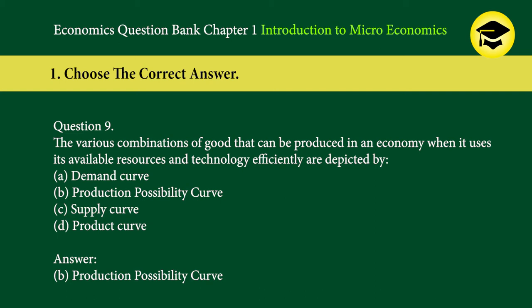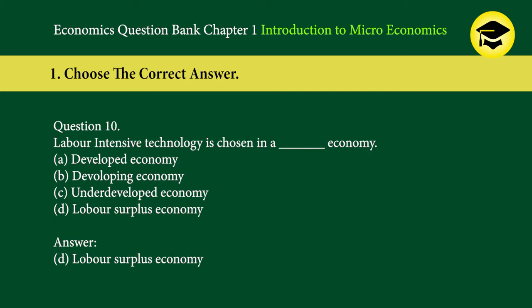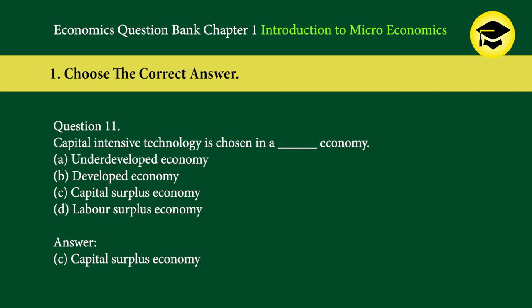Question 9: The various combinations of goods that can be produced in an economy when it uses its available resources and technology efficiently are depicted by — A. demand curve, B. production possibility curve, C. supply curve, D. product curve. Answer: B. Production possibility curve. Question 10: Labor intensive technology is chosen in a — A. developed economy, B. developing economy, C. underdeveloped economy, D. labor surplus economy. Answer: D. Labor surplus economy. Question 11: Capital intensive technology is chosen in a — A. underdeveloped economy, B. developed economy, C. capital surplus economy, D. labor surplus economy. Answer: C. Capital surplus economy.